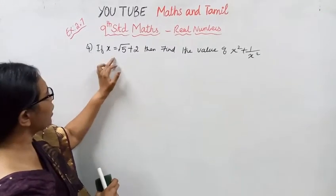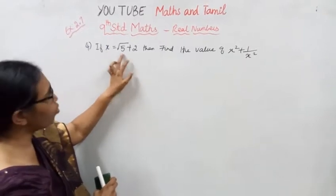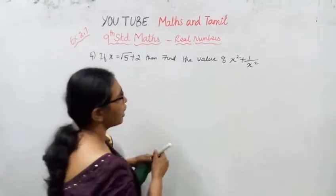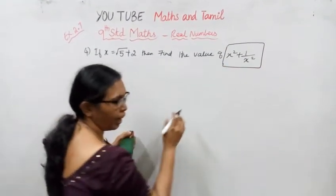This is the 5 marks sum. If x equals root 5 plus 2, then find the value of x square plus 1 by x square.